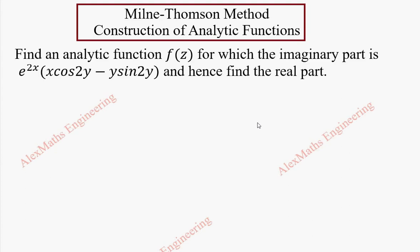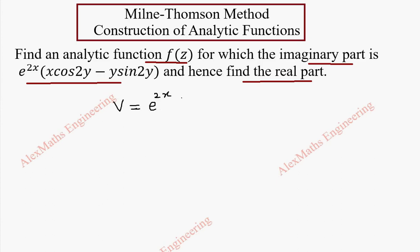Hi students, this is Alex here. In this problem they have given: find analytic function f(z) in which the imaginary part is given and we have to find the real part. The imaginary part v is e^(2x) times (x cos2y minus y sin2y).